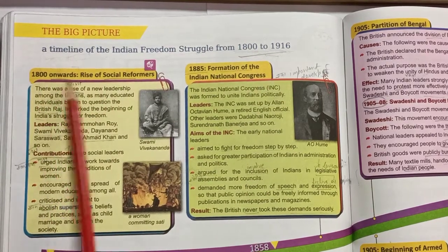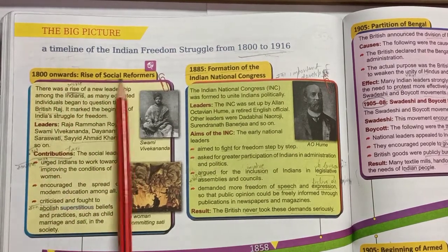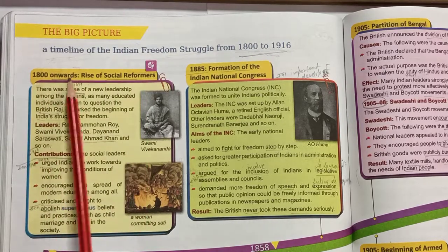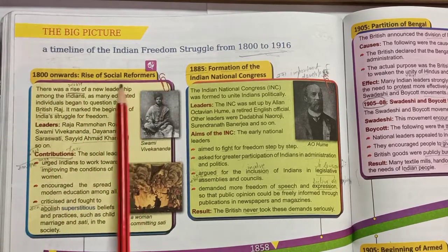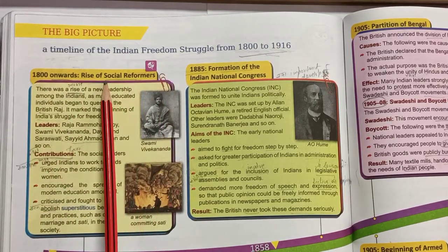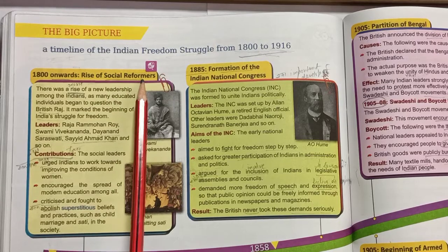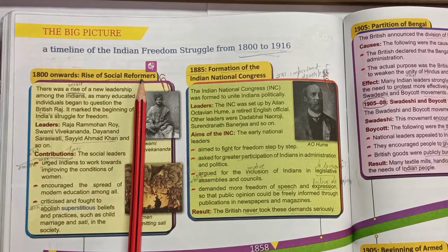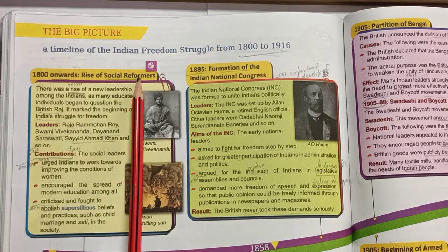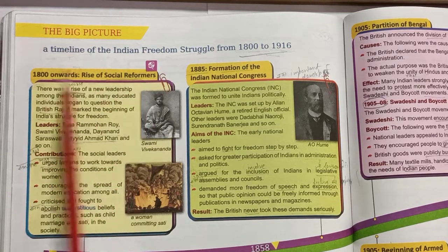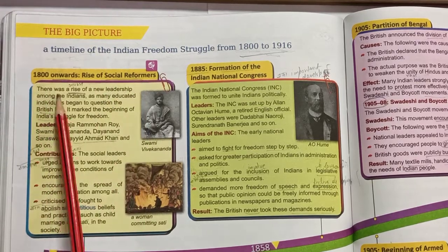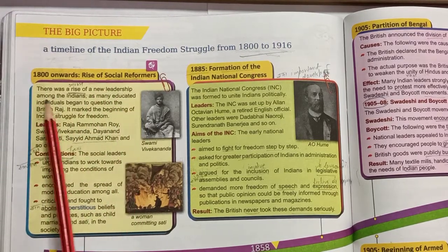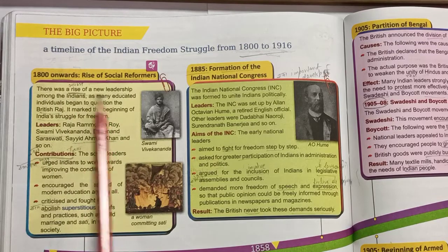1800 onwards: the rise of social reformers. What happened? Social reformers came to rise. Reformers who saw problems in society wanted change. There was a rise of new leadership among the Indians.